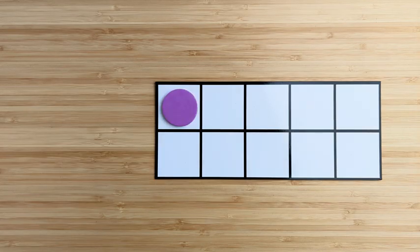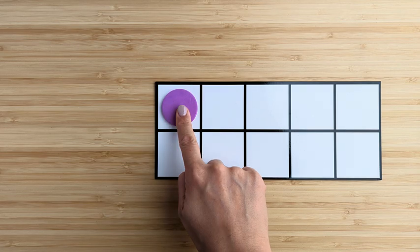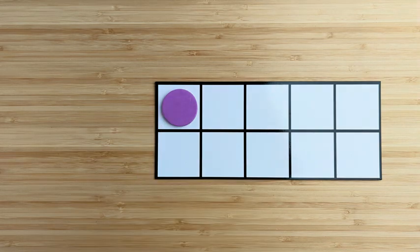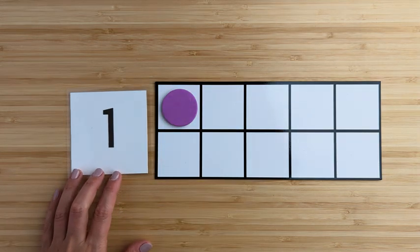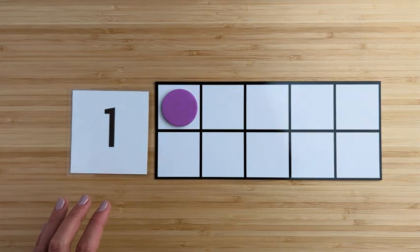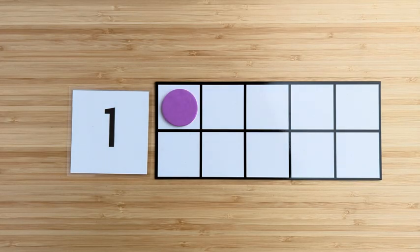How many in all? Point and count. One. One. There is one purple circle.